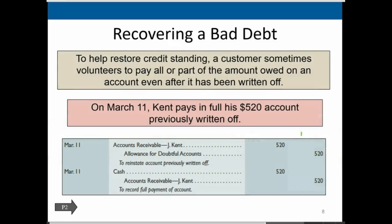To help restore credit standing, a customer sometimes volunteers to pay all or part of the amount owed on an account receivable even after it has been written off. This doesn't happen often, but if we wrote the person off and they disappeared and then came back and actually paid us, we would have to reverse the write-off — just like we did before. We need to put them back into accounts receivable to restore their good standing, and then reduce the accounts receivable.